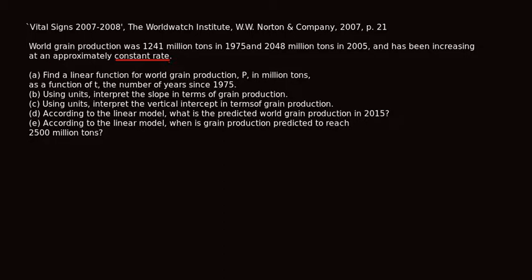We'll sort of ignore the 'approximately' part. It's no surprise that the first question asks us to find a formula for world grain production. To do that, we're going to use the point-slope formula, and for that we need to find the slope and a point. To find the slope, we need two points, so we can make a little table of values.